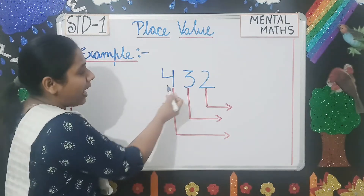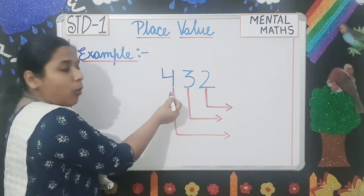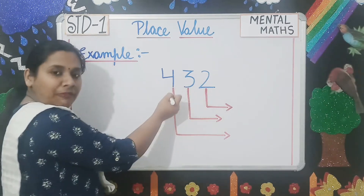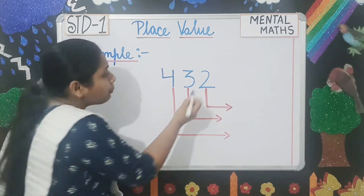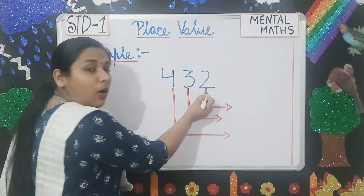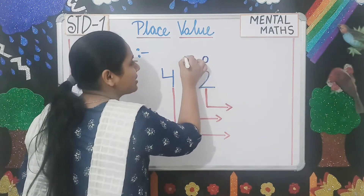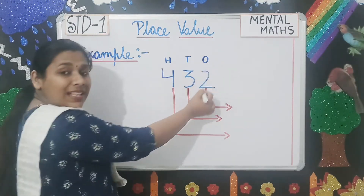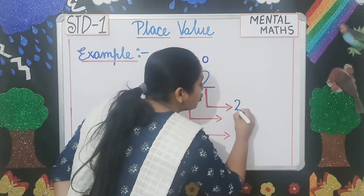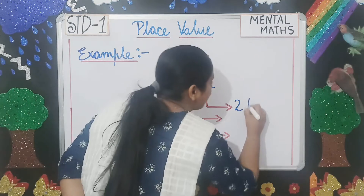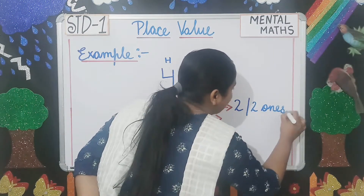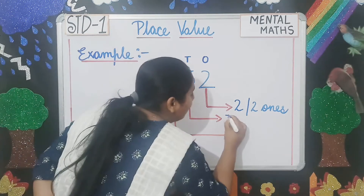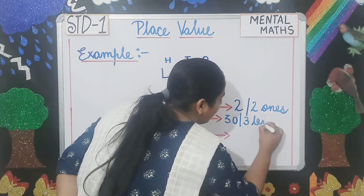For example, look here — I have written the number 432. All three digits 2, 3 and 4 have a particular place value. Since 2 is in the ones place, the place value of 2 will be 2, or we can write it as 2 ones. Now 3 — the place value of 3 will be 30 or 3 tens.